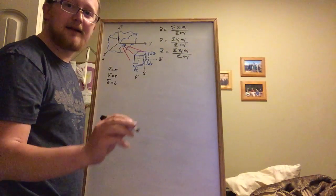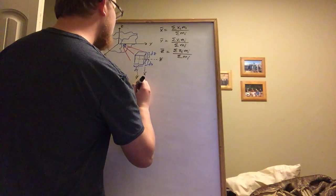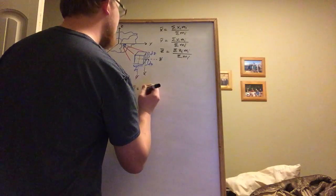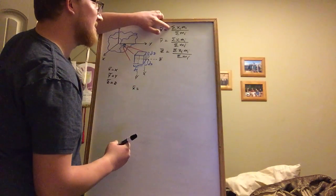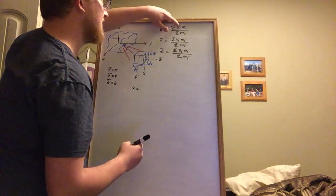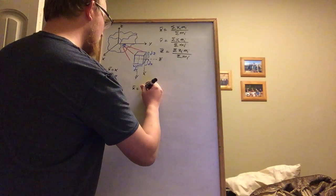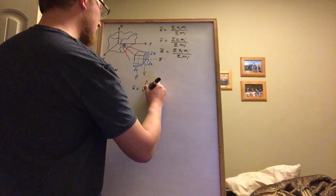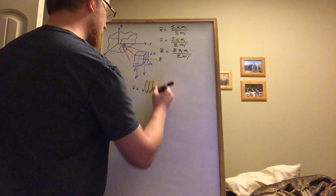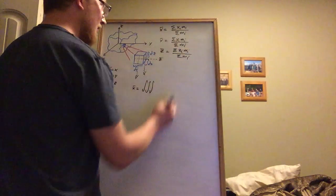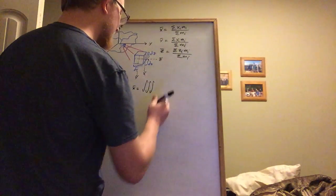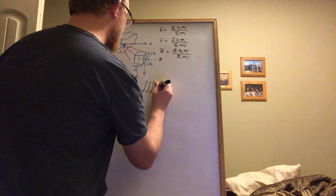X bar is equal to—here it's the finite sum of all the distances and the masses that have those distances—and now what we're going to look at is we're going to take the triple integral of the x distances, so that would be x tilde.